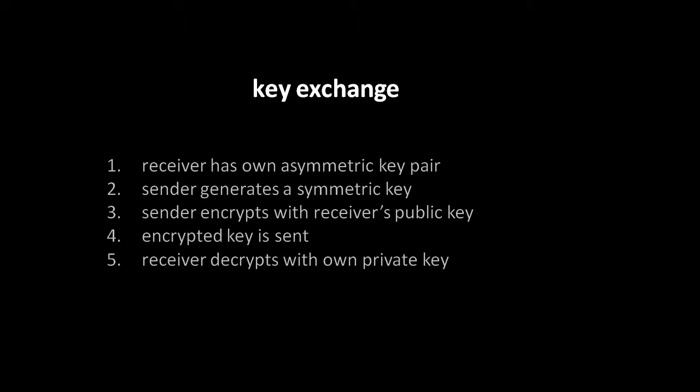As we'll go over when we discuss RSA, the most commonly used public key encryption algorithm, asymmetric encryption tends to be significantly less efficient than symmetric encryption. Therefore, the most common use of public key encryption is actually to exchange symmetric encryption keys. The protocol works like this: the receiver has their own asymmetric key pair, and assume the receiver's public key is out there in the world — say, in some public directory on the internet. The sender generates the symmetric key they wish to share, encrypts it using the receiver's public key, transmits it to the receiver, and the receiver can then decrypt it with their own private key. So now the sender and receiver have a shared secret — this shared symmetric key — which they exchanged over an unsecure channel like the internet.